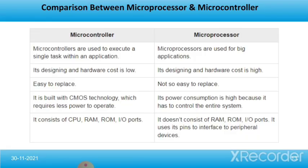Now we'll compare microprocessors and microcontrollers. Microcontrollers are used to execute a single task within an application, whereas microprocessors are used for bigger applications. Microcontroller design and hardware cost is low, whereas for microprocessors it is high. Microcontrollers are easy to replace; microprocessors are not. Microcontrollers are built with CMOS technology requiring less power to operate, whereas microprocessors have high power consumption because they control the entire system. Microcontrollers consist of CPU, RAM, ROM, and input-output ports, whereas microprocessors do not have on-chip RAM, ROM, or input-output ports — they use their pins to interface with peripheral devices.